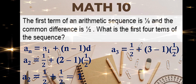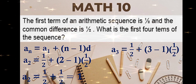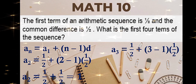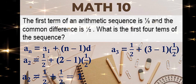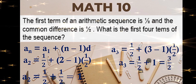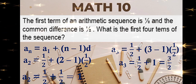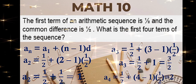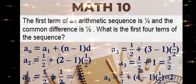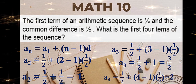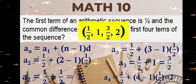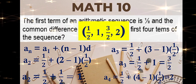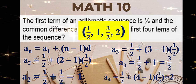To find the third term, we will use the same formula wherein n here is 3. Substitution: first term plus n minus 1 times the common difference. Simplify — that is 3/2. Our third term is 3/2. And the last term is 2 using the same formula. So our first four terms are 1/2, 1, 3/2, and 2. These are the first four terms of the sequence.